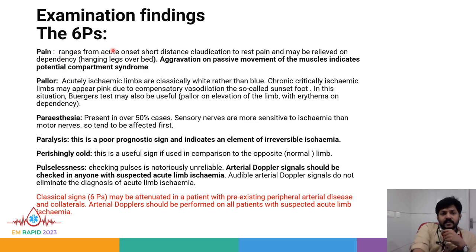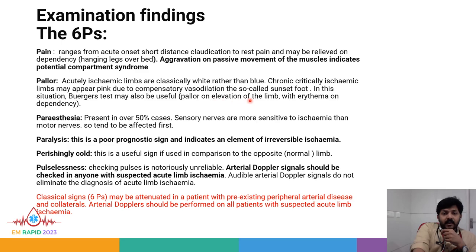Pain in acute limb ischemia ranges from acute onset short distance claudication to rest pain, and may be relieved on dependency by hanging the legs over the bed. Aggravation on passive movement of the muscles indicates potential compartment syndrome. Acutely ischemic limbs are classically white rather than blue. Chronic critically ischemic limbs may appear pink due to compensatory vasodilation — the so-called sunset foot. The Buerger's test may also be helpful: pallor on elevation of the limb with erythema on dependency.